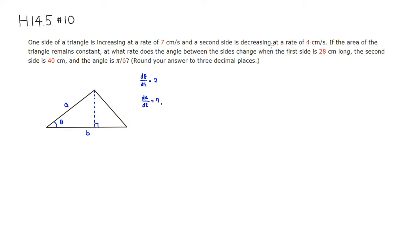The second side is decreasing at the rate of 4 centimeters per second, so db/dt equals negative 4. The first side a is given to be 28, b is 40, and theta is pi over 6. Note that a, b, and theta are all functions of time t.